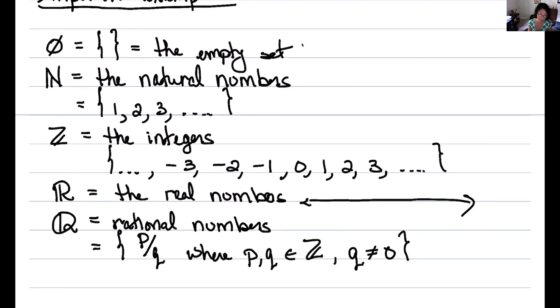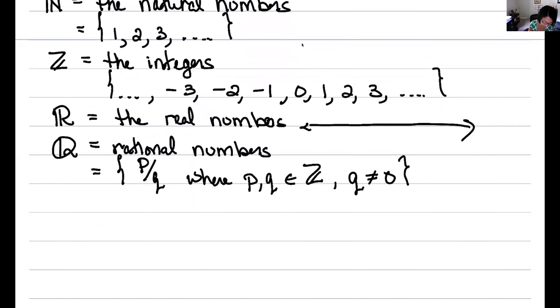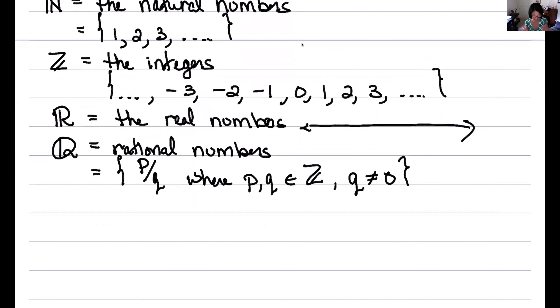So those I think are our most important sets. And now that we have them, there's one more piece of set notation, set building notation. And it's called set builder notation. And it allows us to talk about special elements of sets, like with special properties.